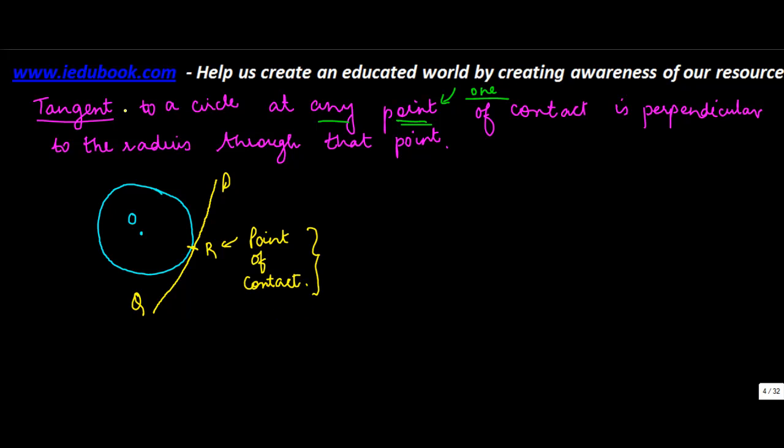Now what does this theorem say? This theorem says that tangent to a circle, which means PQ, at any point of contact, at point R because that's the only point of contact, is perpendicular to the radius through that point.